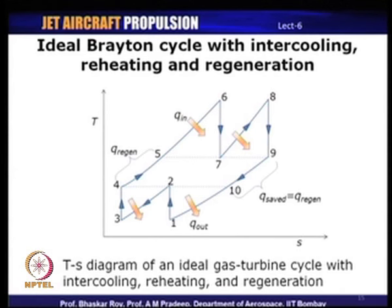While thermodynamically it is straightforward to implement inter cooling, reheating, and regeneration, there are practical limitations. Increasing the number of compression or expansion stages substantially increases mechanical complexity, weight, and cost. Normally, two to three stages of inter cooling and reheat is the maximum that is economically viable in practice.